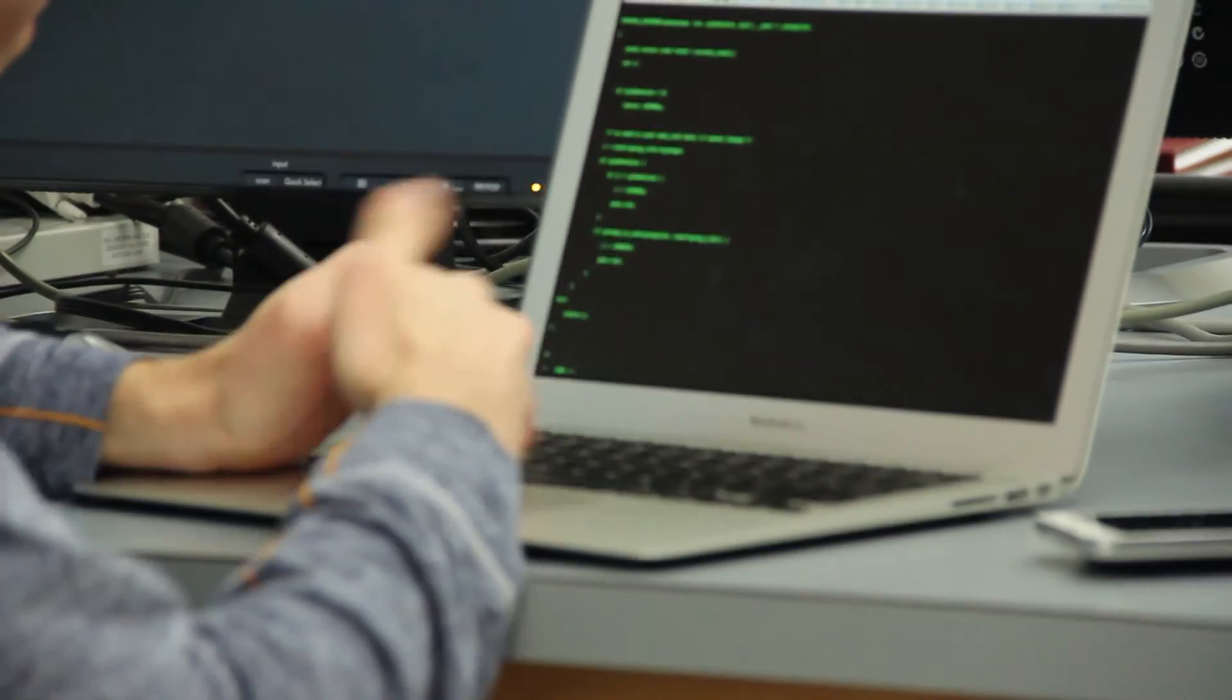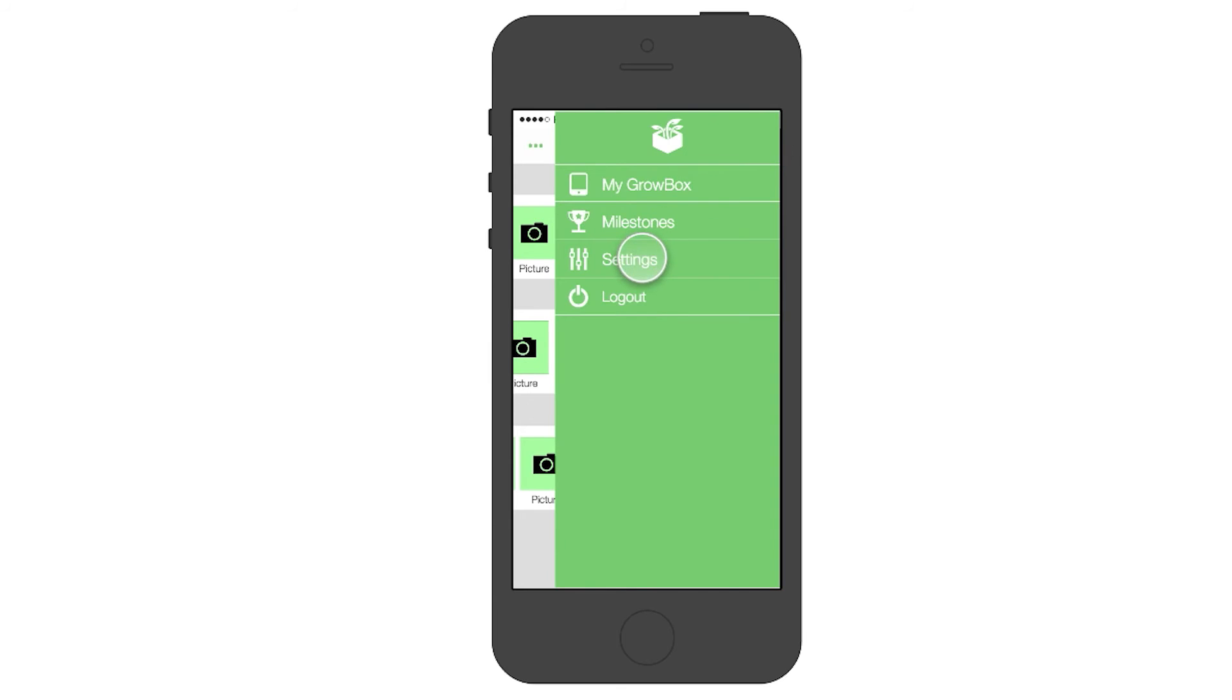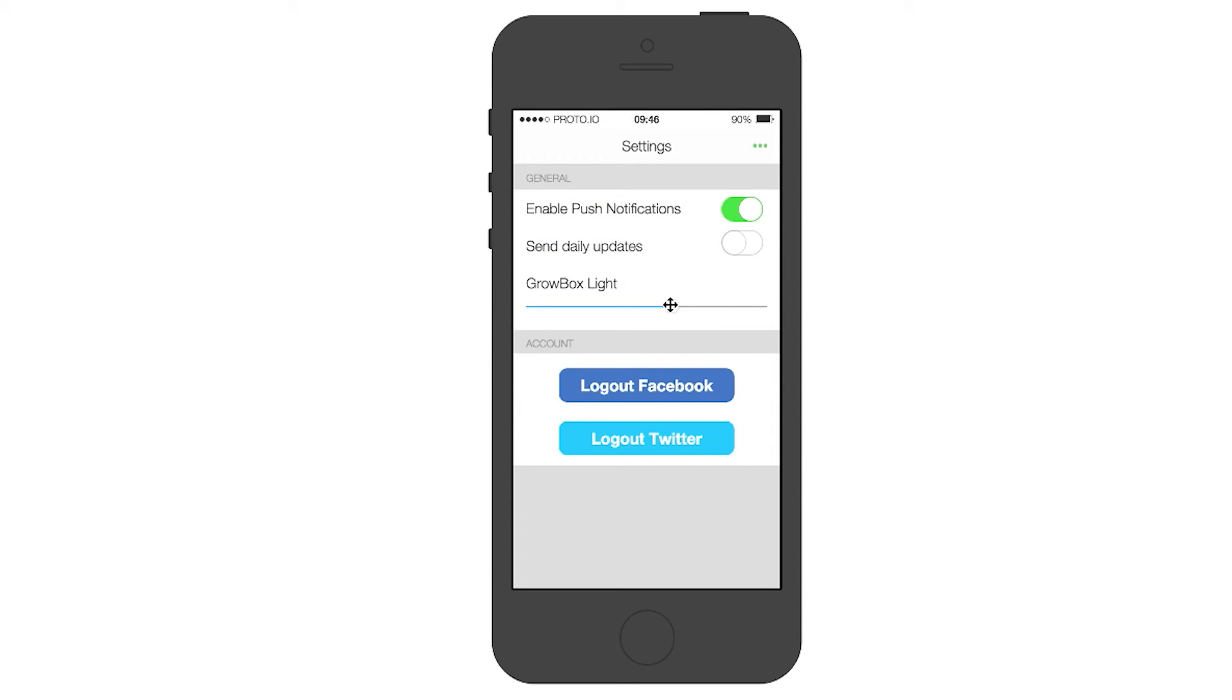We also have a socket server connection that's running the embedded system, which will enable the mobile app user to control the lights, the water control system, and take an image directly from the mobile app.